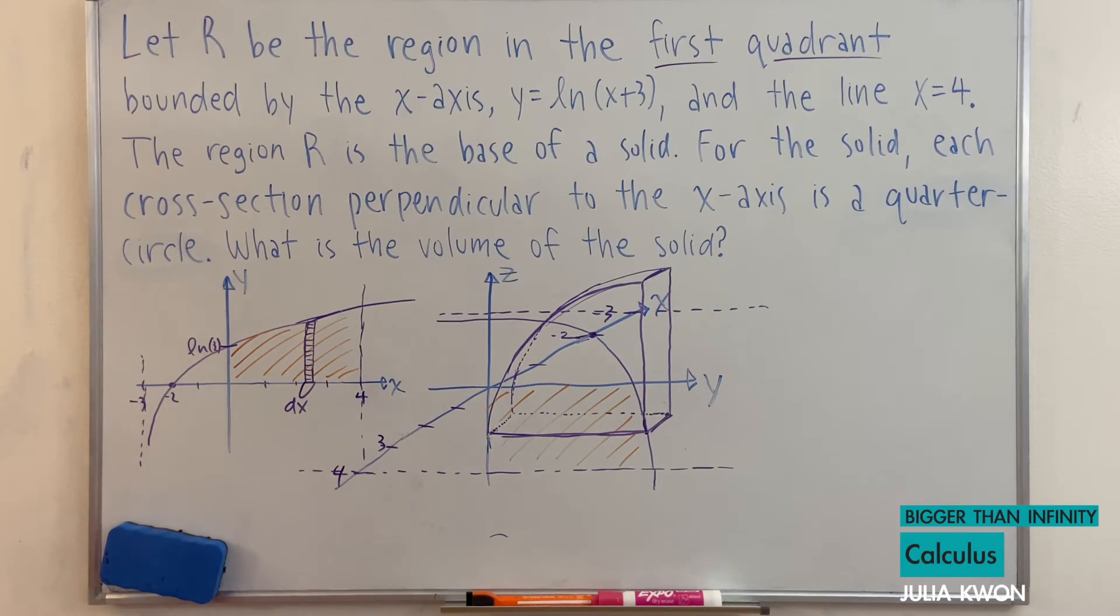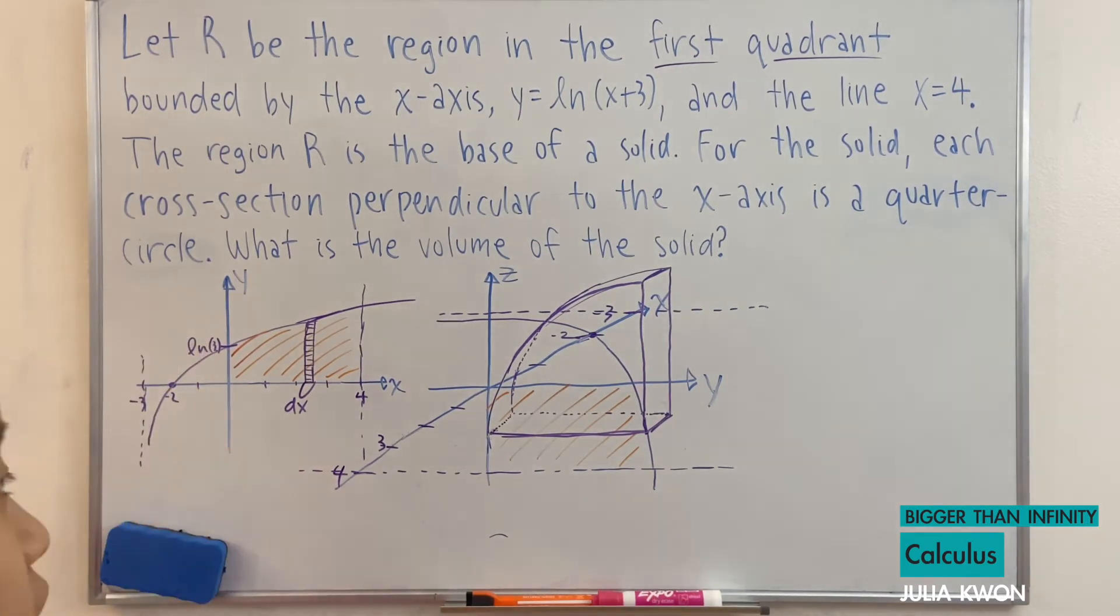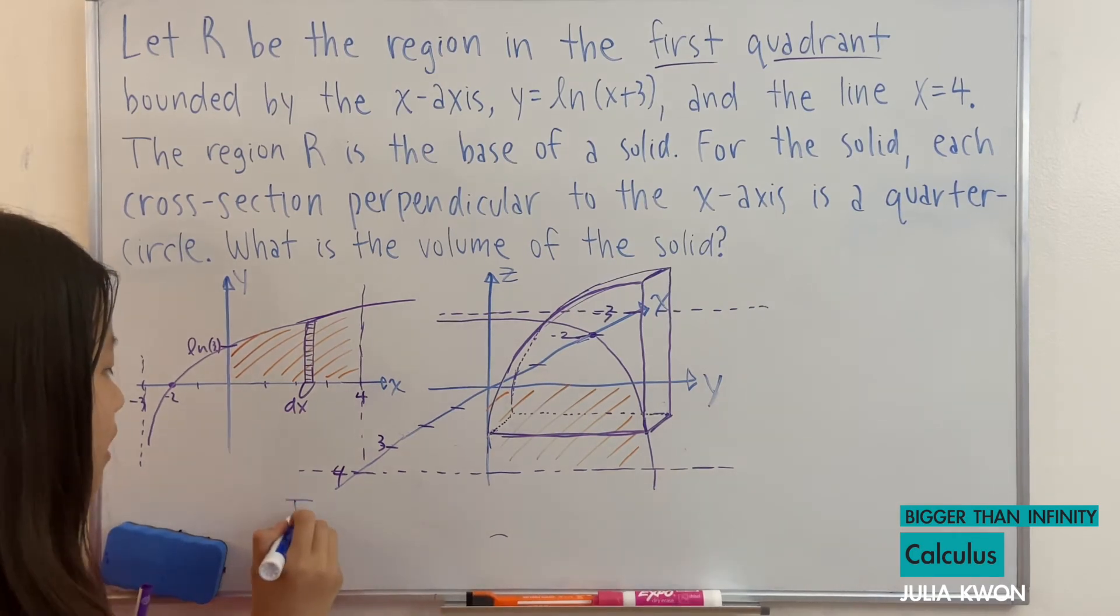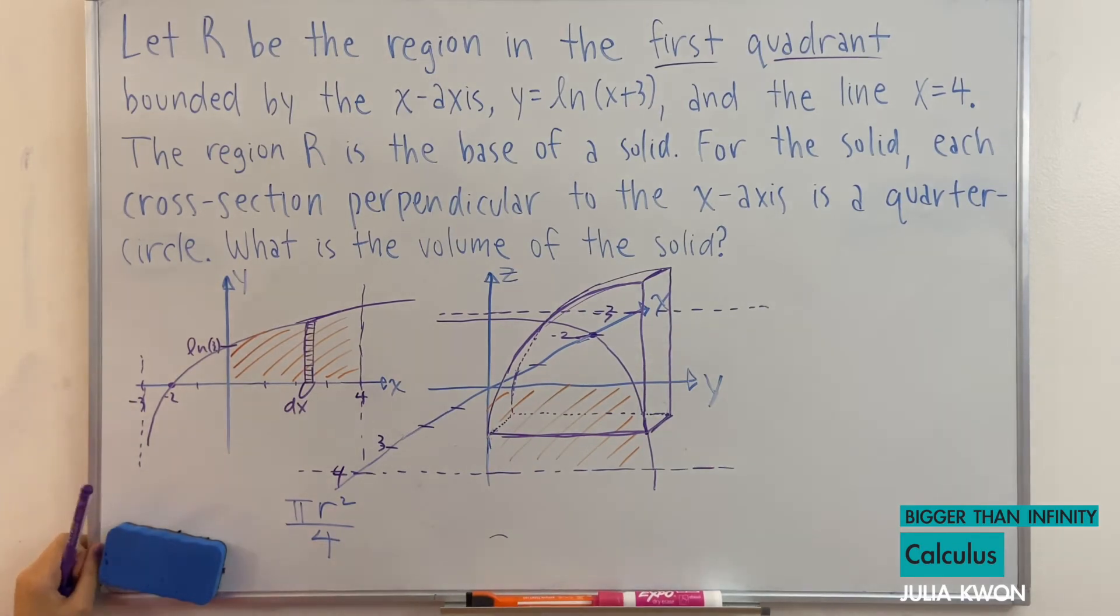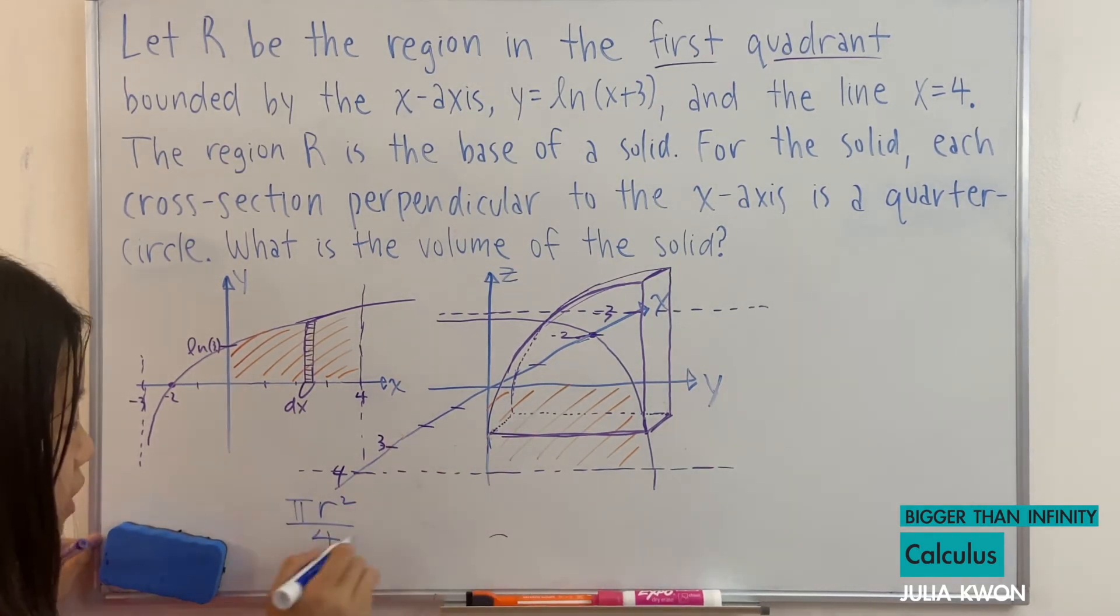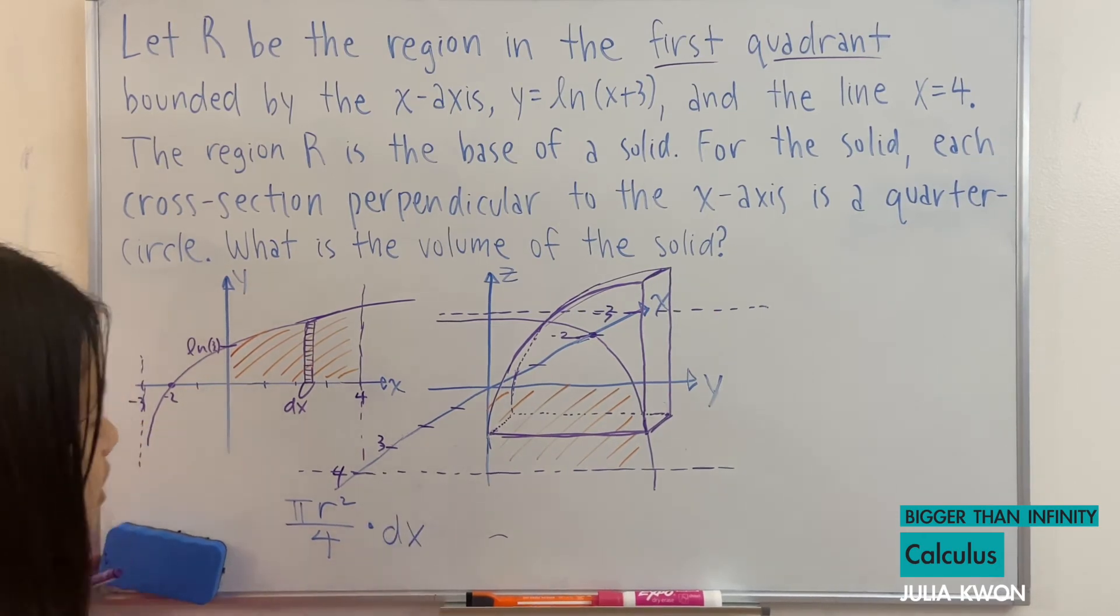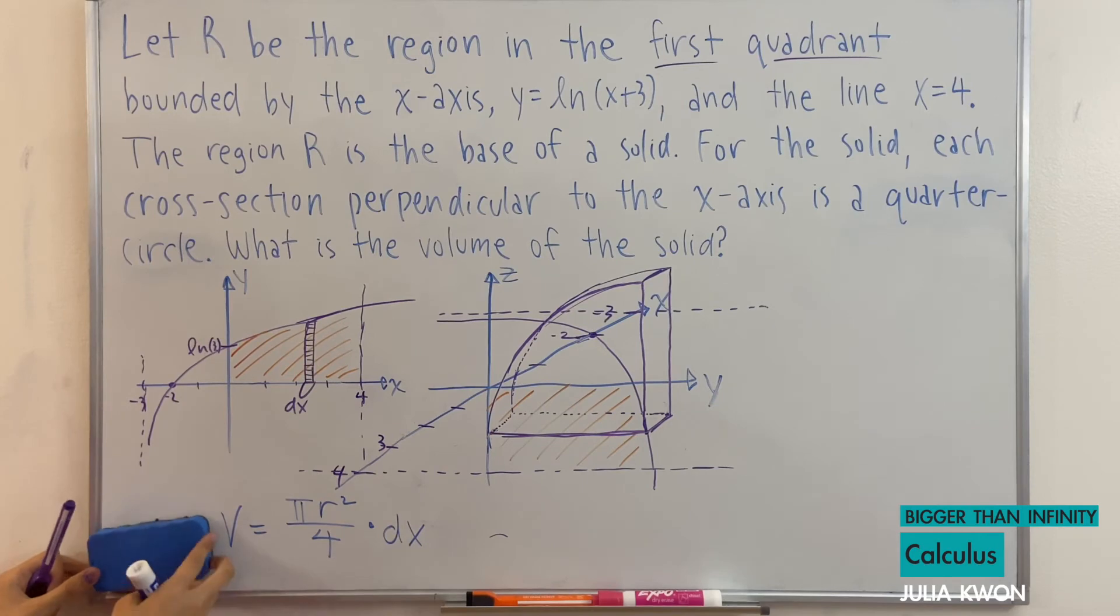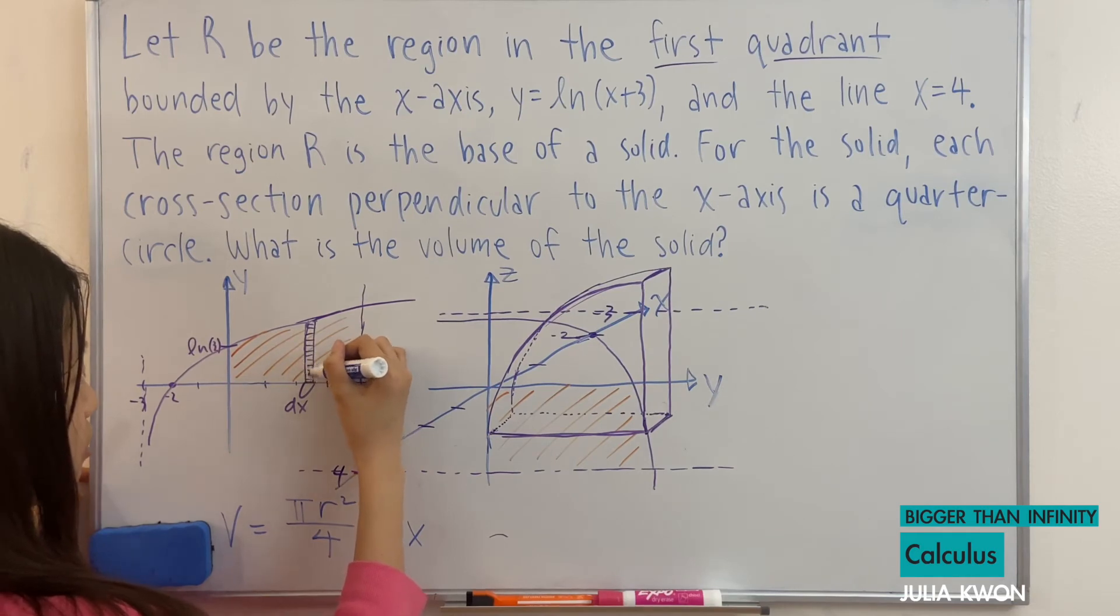And also, now we can find the volume, right? The area of a quarter circle is π r² divided by 4. And so the volume of this would be the area multiplied by dx, because that's the depth.